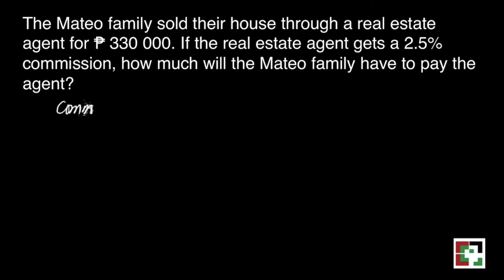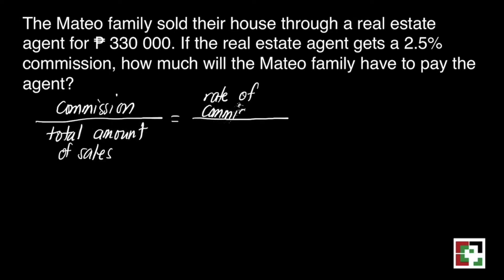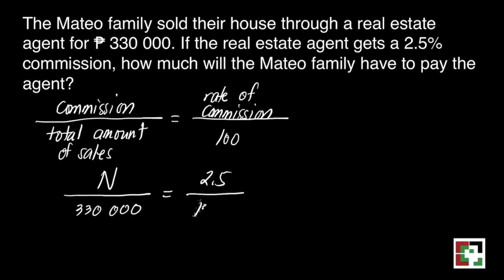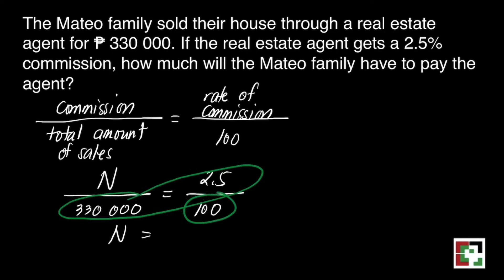We will follow the same formula — commission over total amount of sales is equal to the rate of commission over 100, where 100 is constant. We will just substitute: that's N over 330,000 is equal to 2.5 over 100. We will do cross multiplication solving for N.